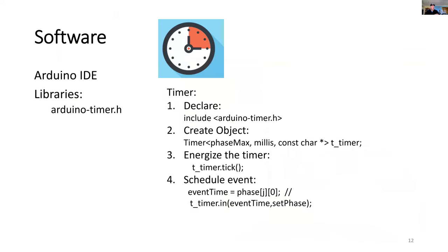Now to the software. I won't go through all the code but highlight some of the features. One feature is to use a timer called the Arduino-timer. The way you use that is to first declare it. I'm going to bring it into my program from an existing library which is installed on my Arduino IDE. I'm going to create an object called the timer or t_timer, and it's going to schedule up to the maximum number of phases. Each phase has its own timer event. In the main loop, I need to energize the timer and make sure it's ticking all the time. Finally, also in the main event, I'm going to schedule the events.